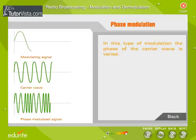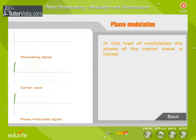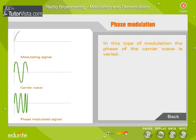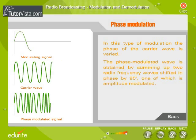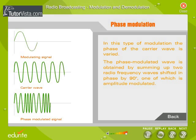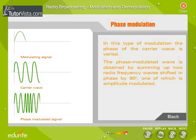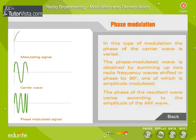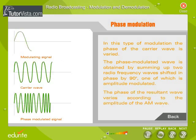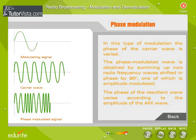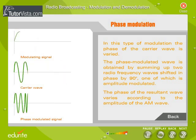Phase Modulation: In this type of modulation, the phase of the carrier wave is varied. The phase modulated wave is obtained by summing up two radio frequency waves shifted in phase by 90 degrees, one of which is amplitude modulated. The phase of the resultant wave varies according to the amplitude of the AM wave.